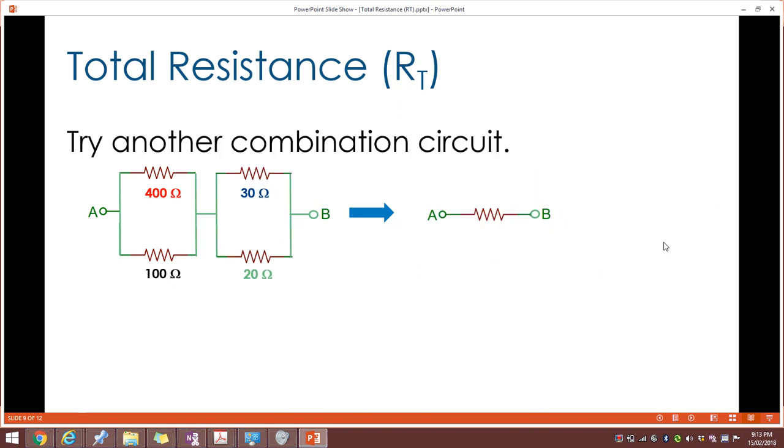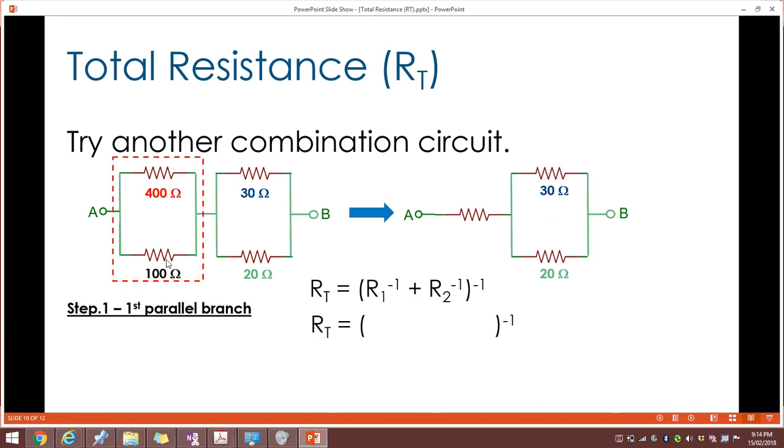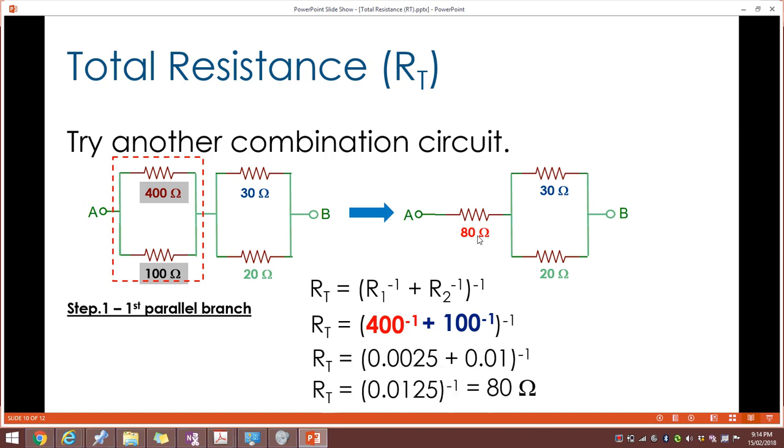Let's have a look I think at our final example here where we have two parallel components and we want to represent that as a single resistance as well. So our first branch we have 400 and 100 in parallel. We'll put that in our equation, 400 to the power of negative 1 plus 100 to the power of negative 1, the sum of which all to the power of negative 1 gives us an answer of 80 ohms. The 400 and 100 together in parallel has a total or effective resistance of 80 ohms.